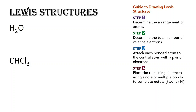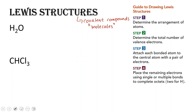The only way that we can determine whether a compound is polar or non-polar is by taking a look at its Lewis structures. Lewis structures are only written for covalent compounds — we call these molecules. It helps us to determine whether compounds are polar or non-polar by looking at the symmetry of the molecule.